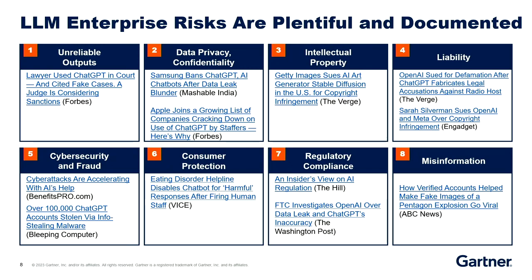There are intellectual property risks, lawsuits, and liability for character defamation. There are new cybersecurity threats we'll talk about. For consumer protection, there was a consumer helpline for eating disorders where ChatGPT gave the caller very dangerous advice — you don't want that happening. There's new compliance, especially in the EU and China, which are way ahead of the United States with regulation. And finally, the misinformation risk — we've had that for a long time, but generative AI just makes it so much easier for the criminals.